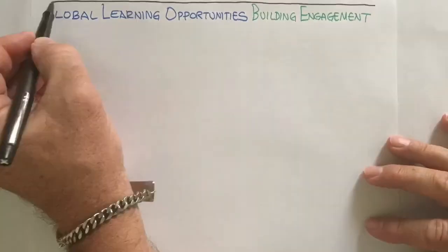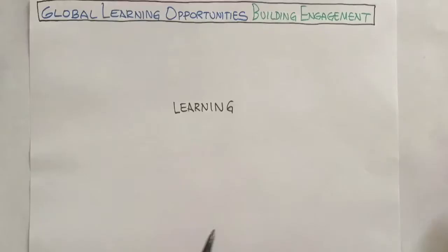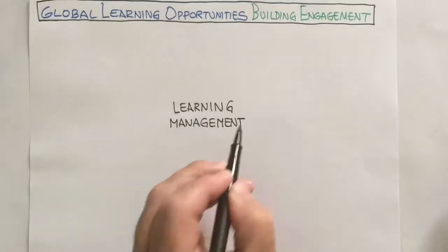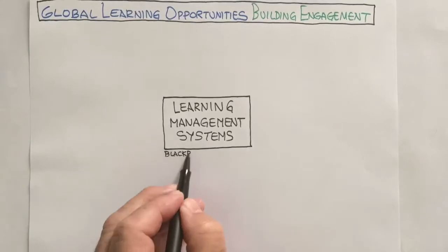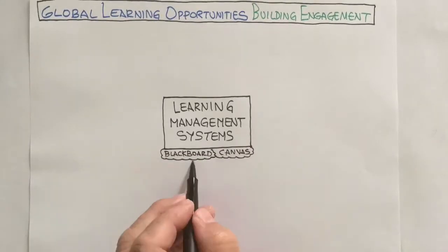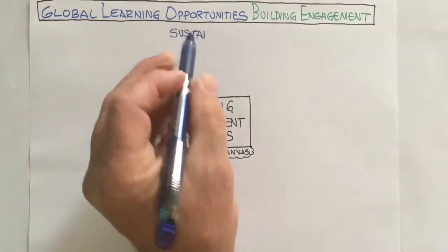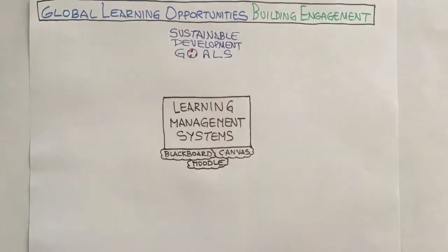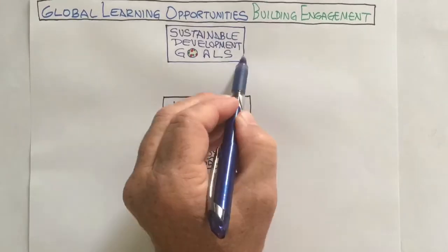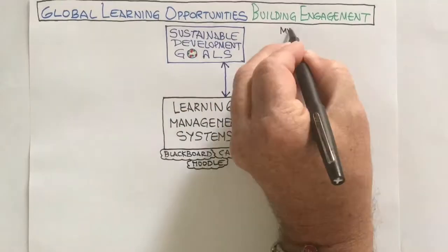We're going to use this model to add extra activities and news to our learning management systems — our online and on-ground courses that can be in any of the known systems. We're going to add sustainable development goals to our courses to connect them to the content of our different classes.